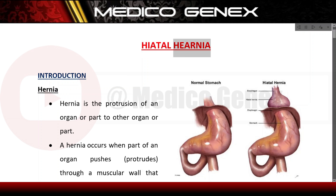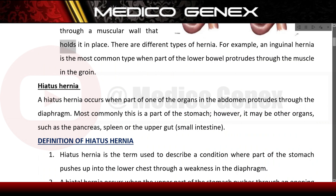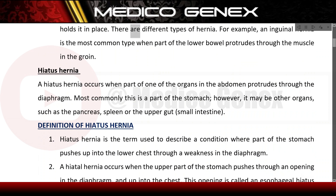Hiatal hernia — introduction. A hernia is the protrusion of an organ or part of an organ through a muscular wall that holds it in place. There are different types of hernia. For example, an inguinal hernia is the most common type, where part of the lower bowel protrudes through the muscle in the groin.